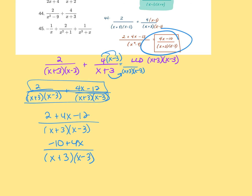On problem 44, you could factor the numerator further, but it's not going to cancel with the denominator, so it doesn't really matter. It's not wrong if you do it — it's just an extra step. If there were an even number in the denominator you'd want to cancel, but if it's not going to simplify, leave it.